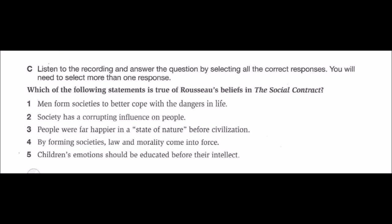Practice Test 2, page 78, section 2. Fill in the blanks. You will hear a recording. Write the missing words in each blank. Recording A. Paper was first manufactured in Europe by the Spanish in the 12th century, although it had been imported since the 10th century. Around the year 1276, a mill was established at Fabriano in Italy. The town became a major centre for papermaking, and throughout the 14th century provided most of Europe with fine quality paper, which it has continued to produce ever since. By the 15th century, paper was also being manufactured in Germany and France, and it was not long before both countries became almost completely independent of material bought overseas. With the increasing availability of paper in Europe, the production of identical printed pictures became almost inevitable.